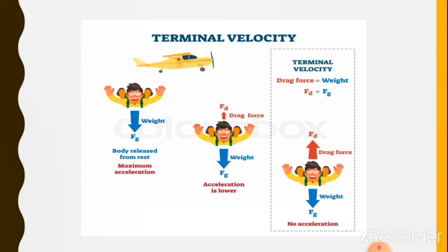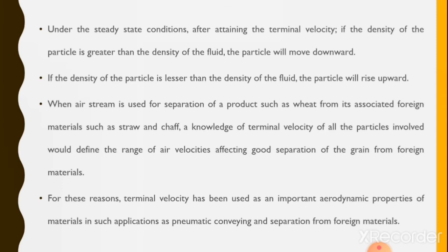The velocity attained by the man at that condition is the terminal velocity, and this happens just before opening the parachute. Under steady state conditions after attaining terminal velocity, if the density of the particle is greater than the density of the fluid, the particle will move downward. If the density of the particle is lesser than the density of the fluid (i.e., air), the particle will rise upward.